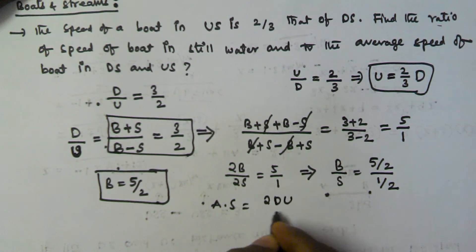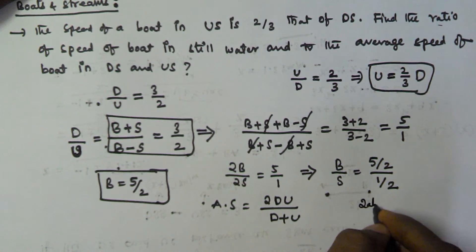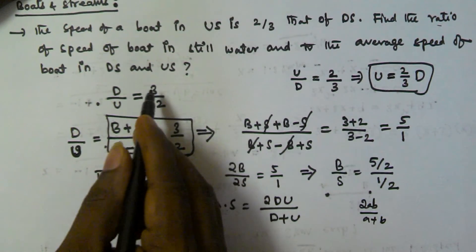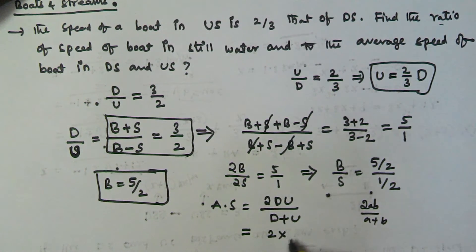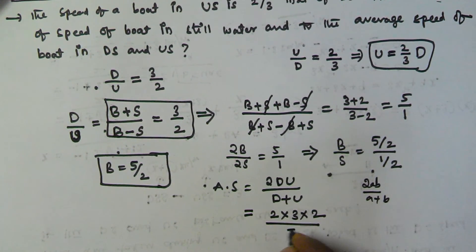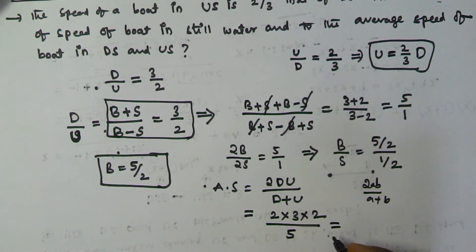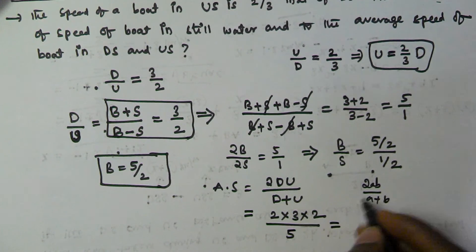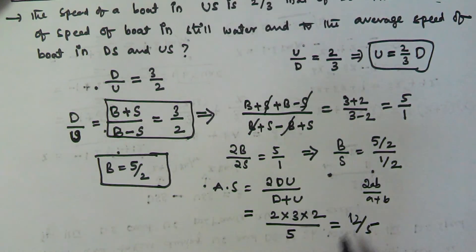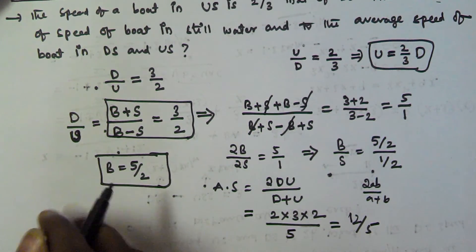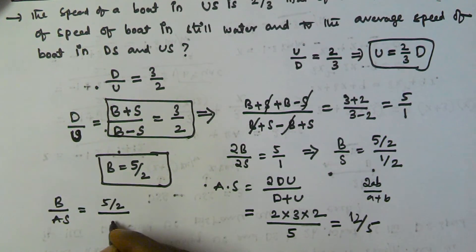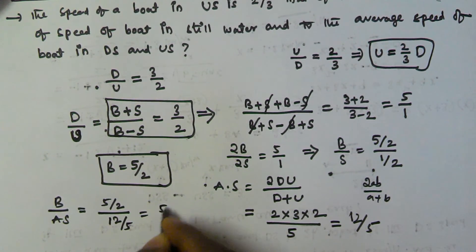The average speed of downstream and upstream is given by 2du divided by (d + u) — generally the formula is 2ab/(a + b). Here d equals 3 and u equals 2, so substituting: average speed equals 2 × 3 × 2 divided by (3 + 2), which is 12 divided by 5. So the average speed is 12/5, and the speed of the boat in still water is 5/2.